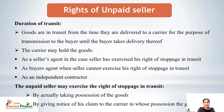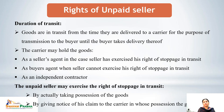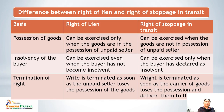The duration of transit: goods are in transit from the time they are delivered to a carrier for the purpose of transmission to the buyer until the buyer takes delivery — the period in between is the duration of transit. The carrier may hold goods as the seller's agent when the seller has exercised his right of stoppage in transit, as the buyer's agent when the seller cannot exercise this right, or as an independent contractor. The unpaid seller may exercise the right of stoppage by actually taking possession of the goods or by giving notice of his claim to the carrier in whose possession the goods currently are.